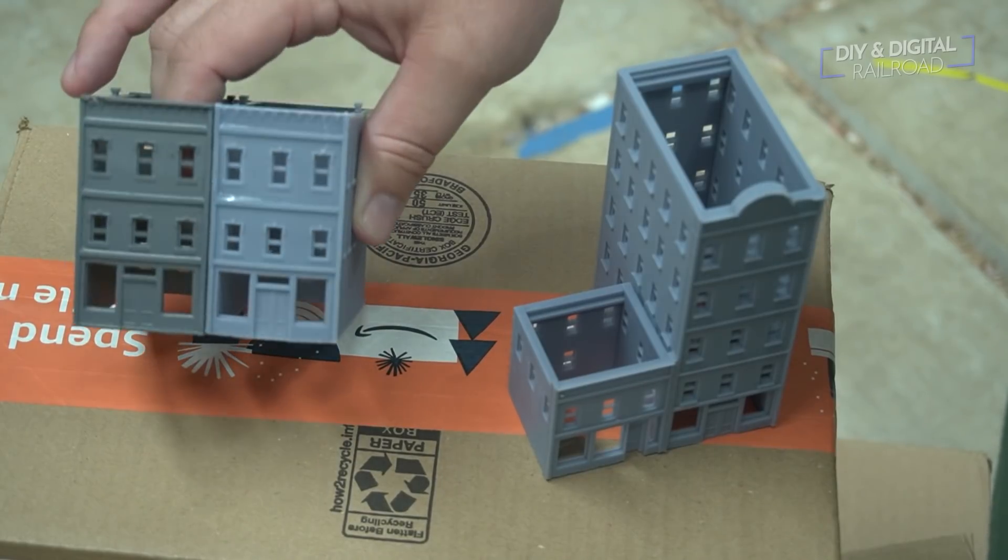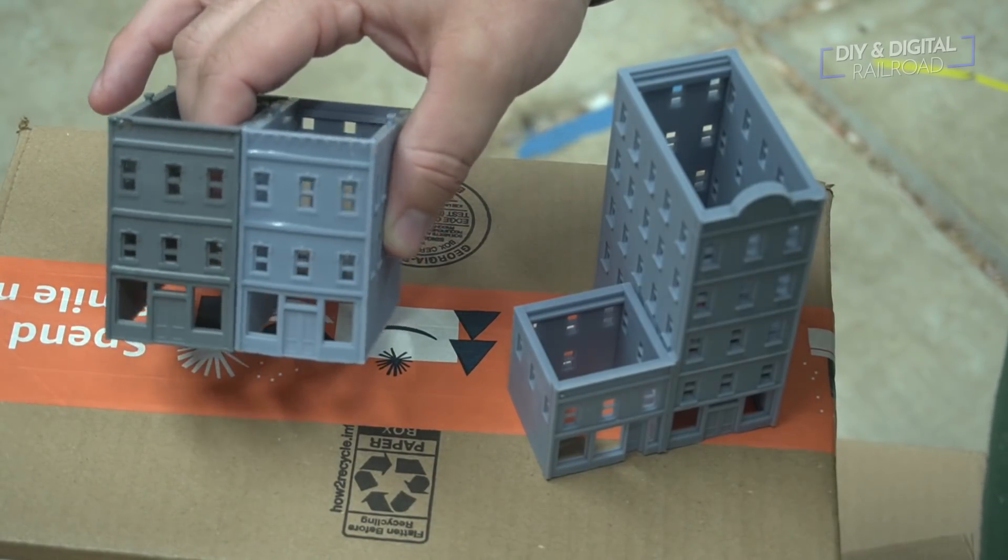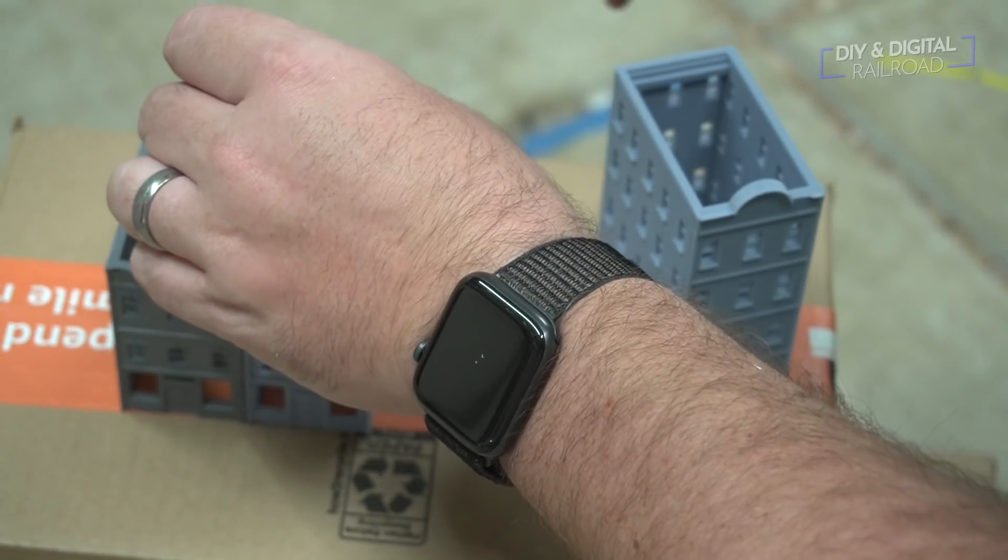I guess you could call this a 3D kit bash hybrid type deal. I'm not really sure. For those of you that are wondering, this is two of my N scale building ones, one of my N scale building twos and one of my N scale building threes in that order from left to right.